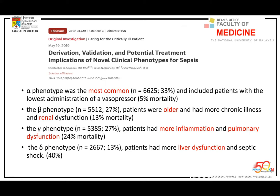During the early goal-directed therapy era around 2010, Professor Rivers et al. showed mortality could be reduced from 40% down to 18% using that protocol. However, currently many people say early goal-directed therapy was not useful. The reason is that based on these four phenotypes, only the alpha phenotype benefits from early goal-directed therapy. Alpha is more the younger, healthy adult without comorbidities and without hyper-inflammation. Beta is the older population — not a benefit. Gamma is the hyper-inflammation type with ARDS, and delta has recurrent ascending liver failure with septic shock. These three groups did not benefit from early goal-directed therapy.